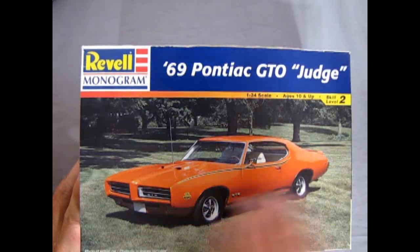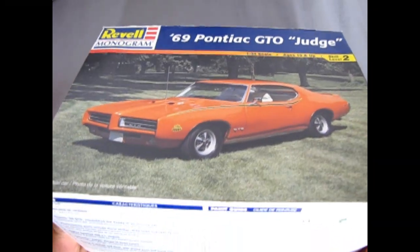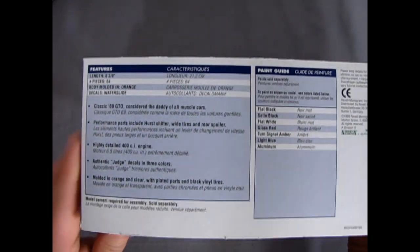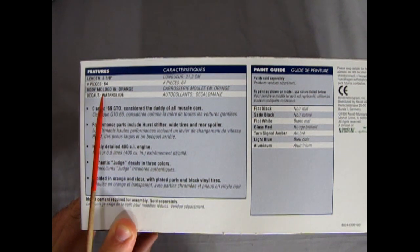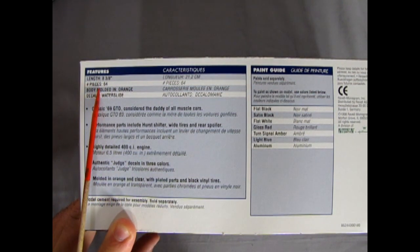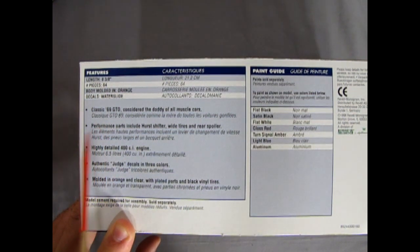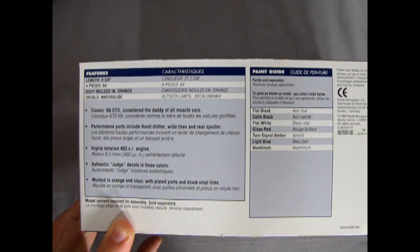Looking at the box you see a photographic image of our GTO, good for reference. Up on the side here we have our features. The car is eight and three-quarters inch long. There's 64 pieces so it's a good starter kit. Molded in orange. Classic 69 GTO considered the daddy of all muscle cars.